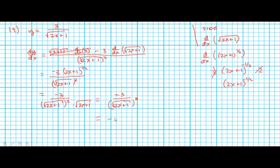The book lists the final answer as negative 3 times (2x plus 1) to the negative 3/2 power, and the expressions are absolutely equivalent. The negative because it's on the bottom, the 3 because there's a 3 there, and the 1/2 because it's the square root.